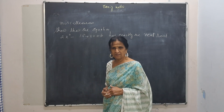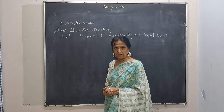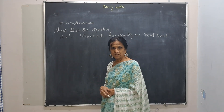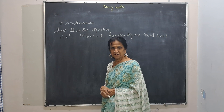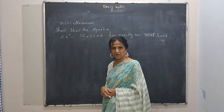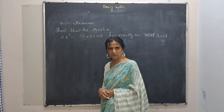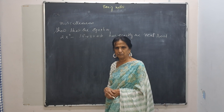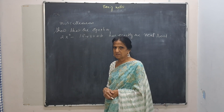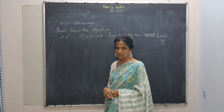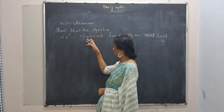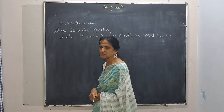Generally, we solve a cubic using the factor theorem — trying factors of 6, like plus or minus 1, 2, 3, 6, then doing long division to get a quadratic and solving it. But here, I don't want to do all that, and you won't get anything either — if you put 2 or minus 2, it doesn't become 0.